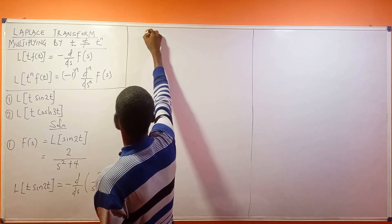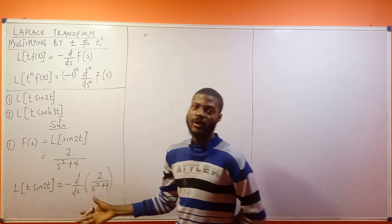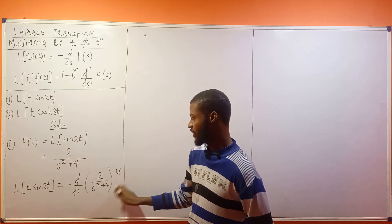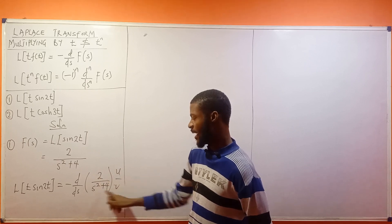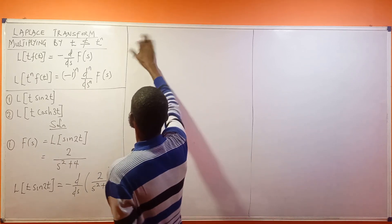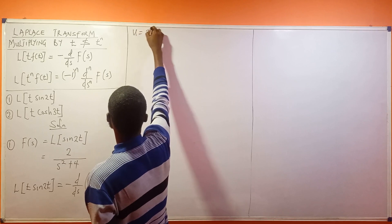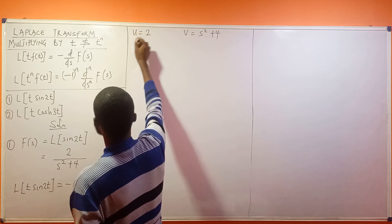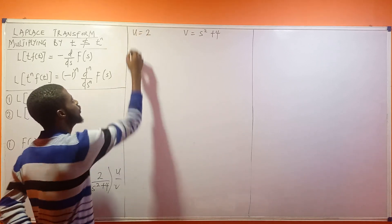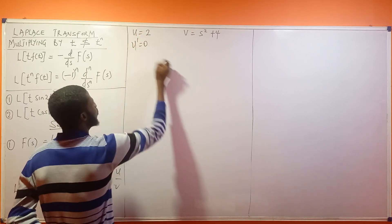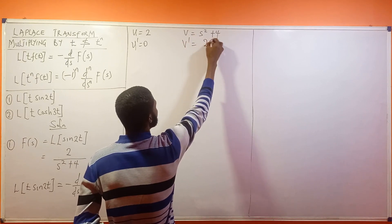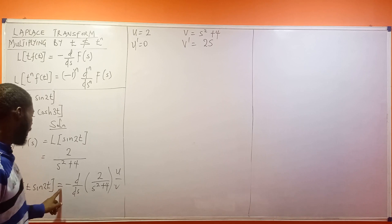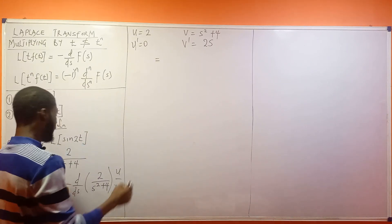We're going to use the quotient rule here. So this is u over v, where u is 2 and v is s squared plus 4. So u equals 2, v equals s squared plus 4. Then u prime is going to be 0 and v prime is going to be 2s — that's normal differentiation.